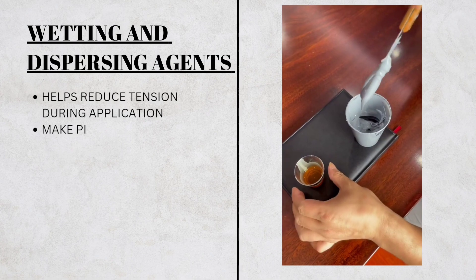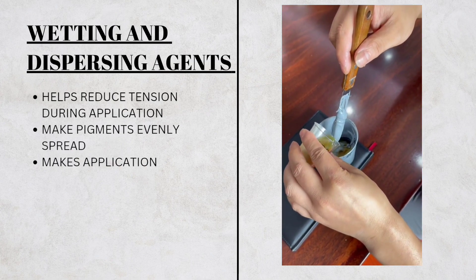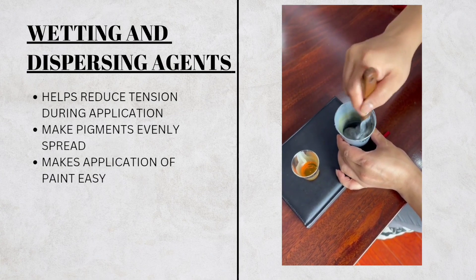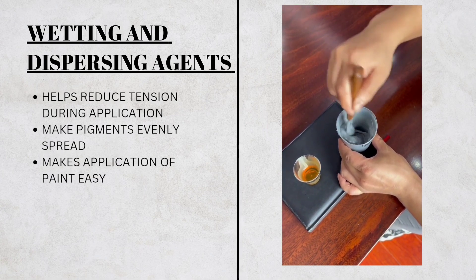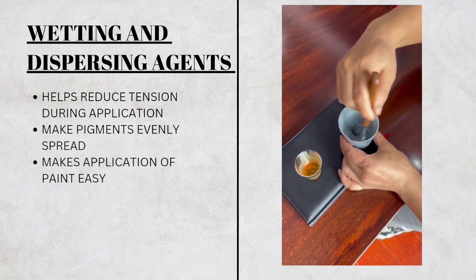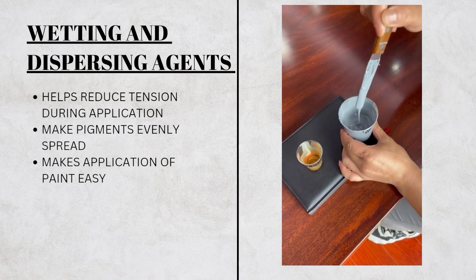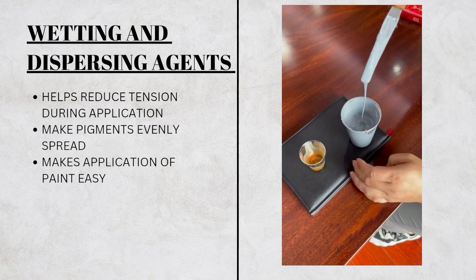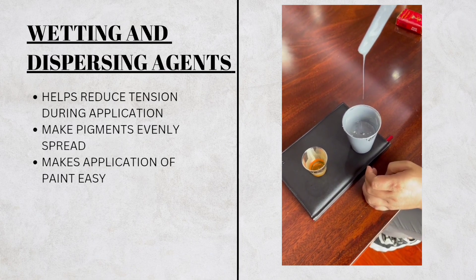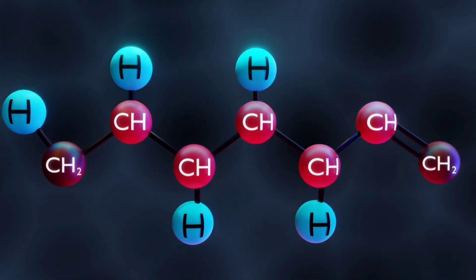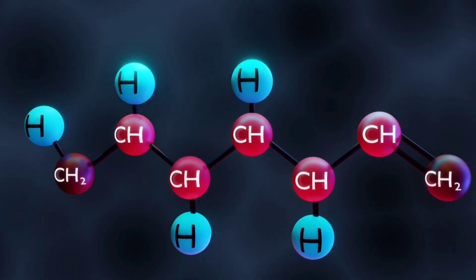The next important raw material is the wetting and dispersing agent. These are very important raw materials because they make sure that other raw materials can disperse or spread evenly into the mixture and ensure an even reaction throughout. Raw materials like pigment, especially powder pigment, tend to clump together or not mix well — a dispersing agent takes care of that problem. It also ensures that there is no surface tension during application, making sure the paint applies evenly.